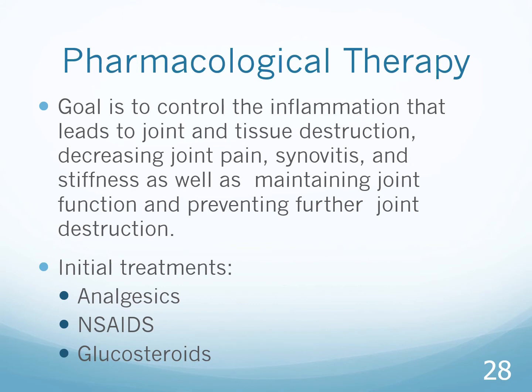Initial treatment includes analgesics — we may start with Tylenol. If Tylenol controls the pain along with stretching and dietary changes, that is ideal. However, if Tylenol is no longer working, we move up to an NSAID, a non-steroidal anti-inflammatory. After that, because we need to decrease inflammation, we move on to a steroid — a glucocorticosteroid — which may be given PO, IM, intra-articularly (directly into the synovial fluid to handle synovitis), or IV.